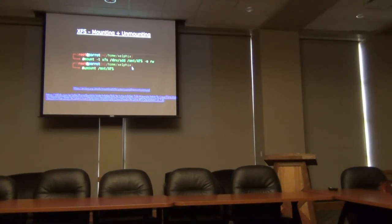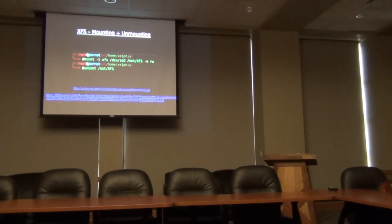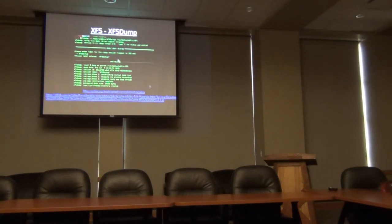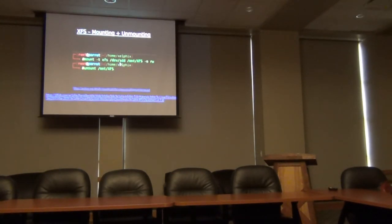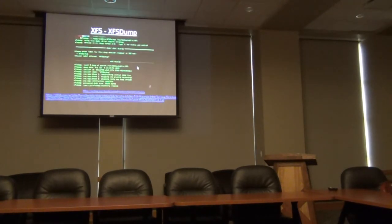Now we're mounting XFS. You have the mount command — '-t' is type, so I'm specifying XFS type. This is the raw disk: /dev/sdd — it's going to be the fourth disk. Then the directory I'm mounting at: /mount/xfs. Mounting it and it's running. Then unmounting — that's the joke with Linux: 'umount' instead of 'unmount' — they leave out the 'n'. The most interesting thing about XFS is that you can back up the metadata.